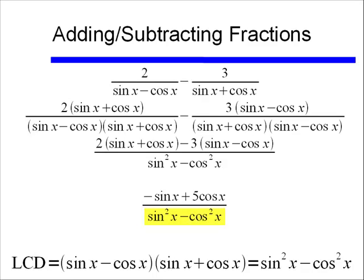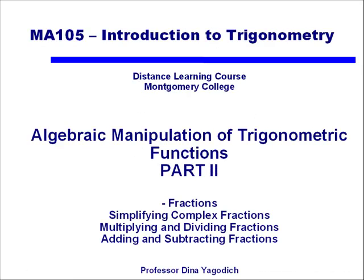Although it looks tempting to change sine squared x minus cosine squared x to 1 or negative 1, remember that Pythagorean identity only works if I have sine squared x plus cosine squared x. And now we've gone through dealing with fractions with algebraic manipulations of trigonometric functions.